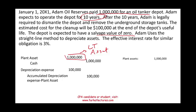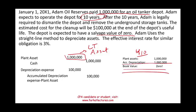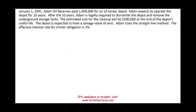Ten years later, we'll have the plant asset at a million and accumulated depreciation at a million. This is year 10, so the book value of the plant asset is zero — therefore this plant asset is gone. Now we need to record the asset retirement obligation. Remember, we don't have to pay this until 10 years from now — in 10 years we have to come up with $100,000.